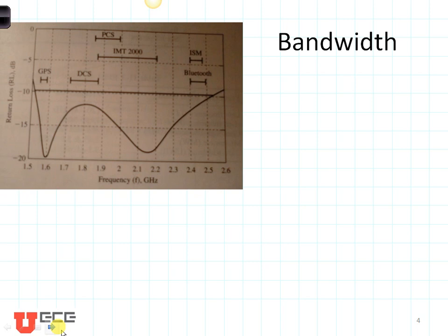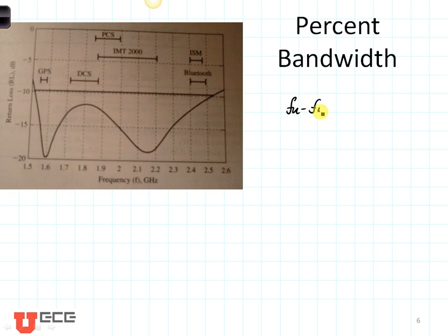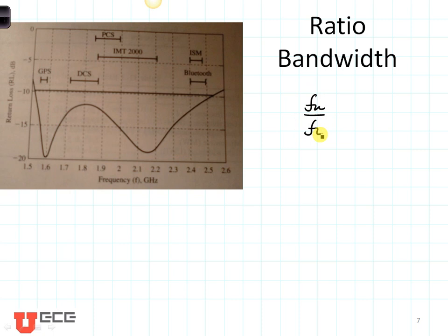For this example of the PIFA antenna, we have a lower frequency and an upper frequency, and the bandwidth is defined as the upper frequency minus the lower frequency. Sometimes we define bandwidth as the fractional bandwidth: the upper frequency minus the lower frequency divided by the center frequency. Occasionally we define this as a percent — upper minus lower divided by center times 100. The ratio bandwidth is the upper divided by the lower.